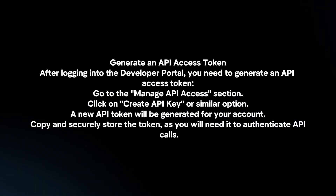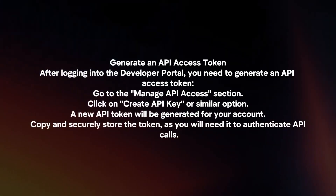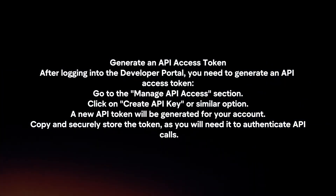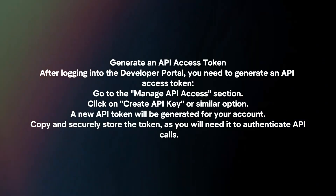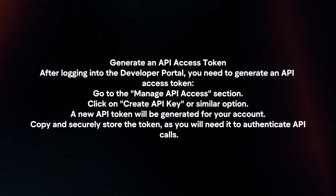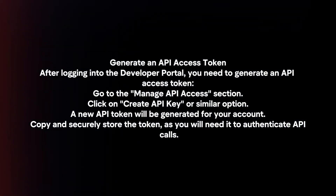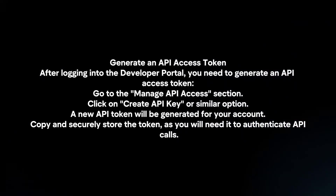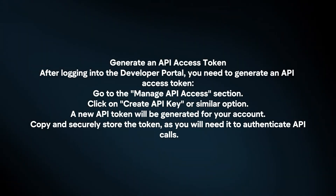Generate an API access token. After logging in to the developer portal, you need to generate an API access token. Go to the Manage API access section and click on Create API key or a similar option. A new API token will be generated for your account. Copy and securely store the token, as you will need it to authenticate API calls.